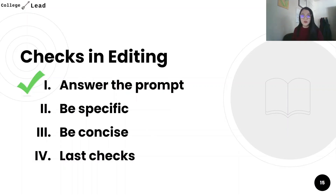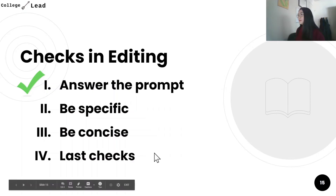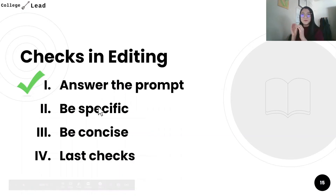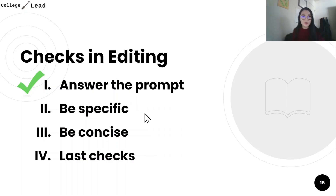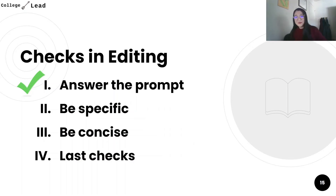Always sanity check yourself and ask if you're providing all the information colleges want to know about you. Once you have that solid foundation, you go on to fix the granular details: being specific, being concise, and doing the last grammar checks. If you're worried your essay isn't unique or doesn't stand out, subscribe and hit the notification bell — I'll be posting part two on how to be specific in my next video. If you found this helpful, I'd love a thumbs up. Thank you so much for watching — I'll see you in the next one.